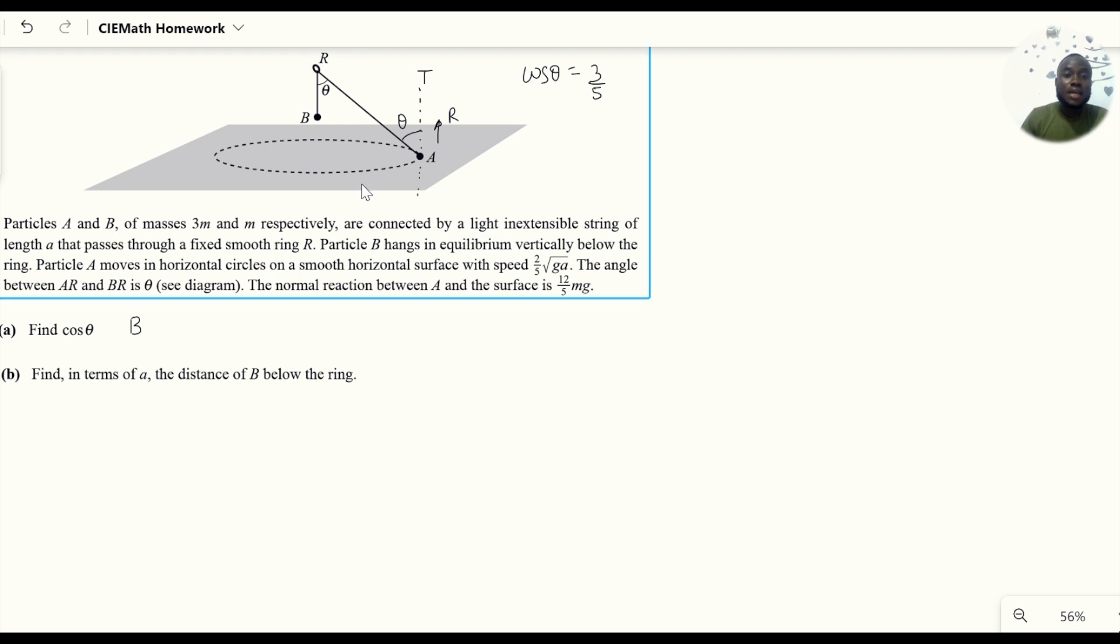Now A is moving in a circle. Let this be the center of that circle, which is vertically below the ring. The radius of that circular path is the lowercase r I'm defining here. The tension in the string has a component directed towards the center of this circle, and that's the only force acting towards the center, providing the centripetal force required to keep A in this circular path.